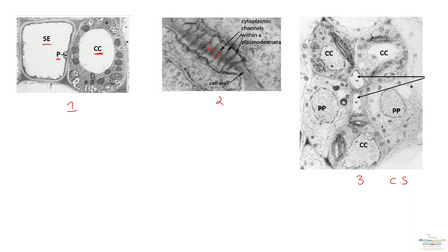That's the end of this video. The next video will look at how the sieve tube elements and companion cells work to transport substances through the phloem — something called the mass flow hypothesis.